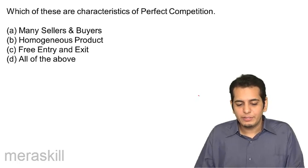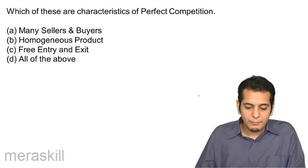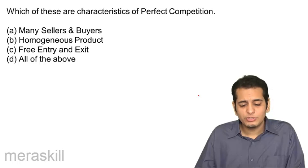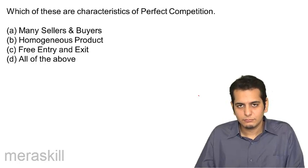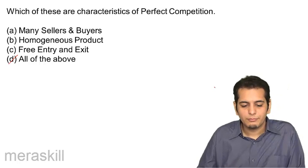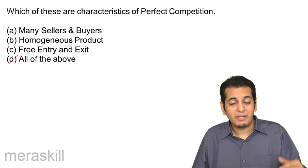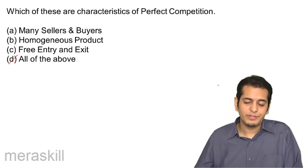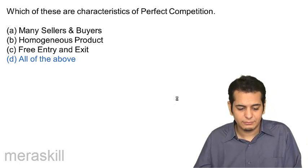First question: which of these are characteristics of perfect competition? A. Many sellers and buyers. B. Homogeneous products. C. Free entry and exit. D. All of the above. The answer is all of the above, because all of them are the characteristics of perfect competition — many sellers and buyers, homogeneous products, free entry and exit. Let's check. Yes, that's the answer.